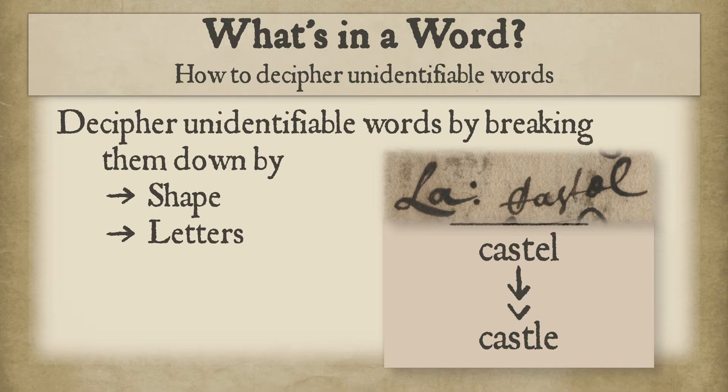In this instance, we can see the shape of Phineas' 'castle' is similar to the shape of its accurate spelling, only with the last two letters transposed.